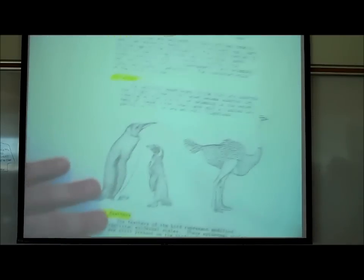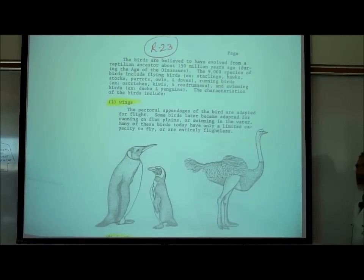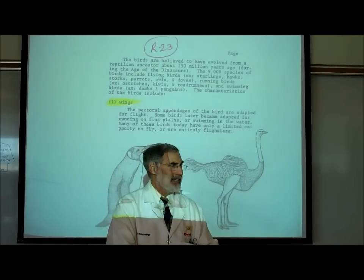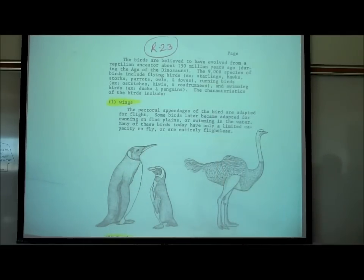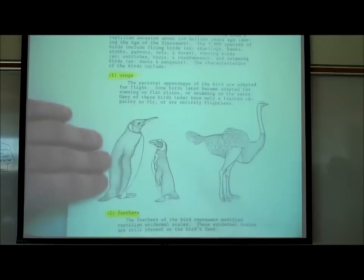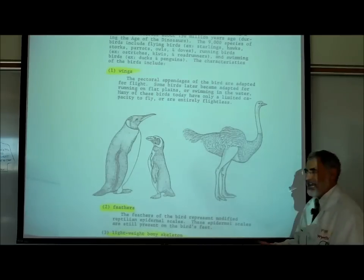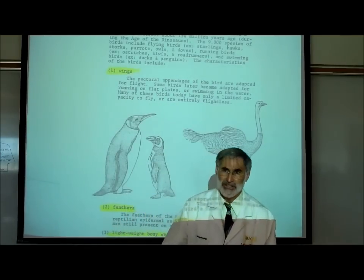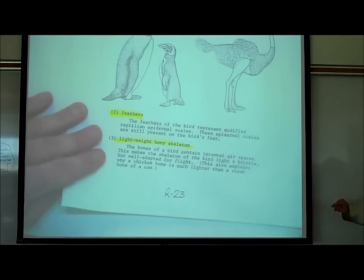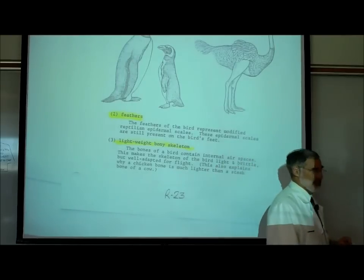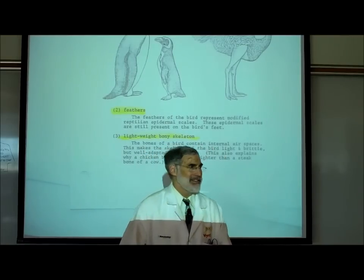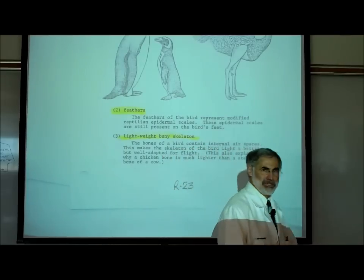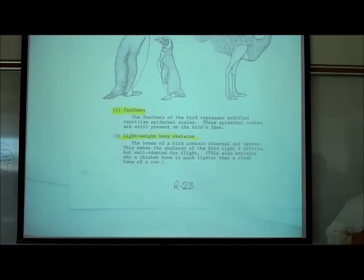Birds are believed to have evolved from reptiles — if you've ever seen the feet of a chicken, they're all scaly, just like the scaly skin of lizards. All birds have wings, but what's unique is that bird wings have feathers. Feathers are believed to be modified scales from reptiles. Birds also have a lightweight skeleton — bird bones are very light so they can fly.